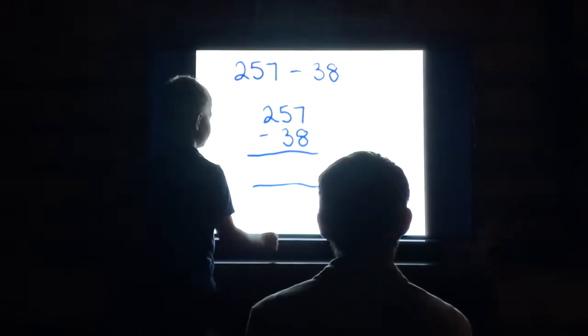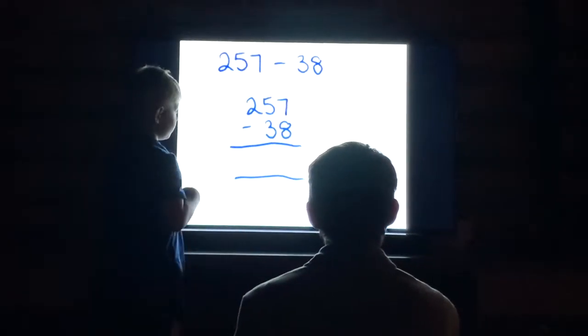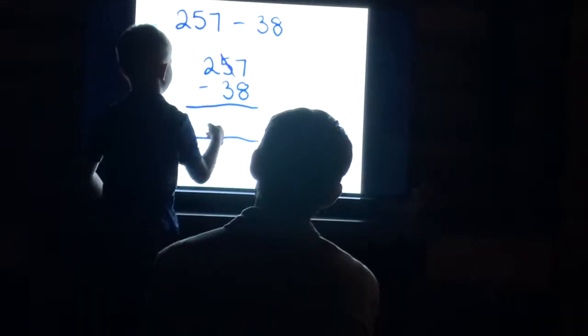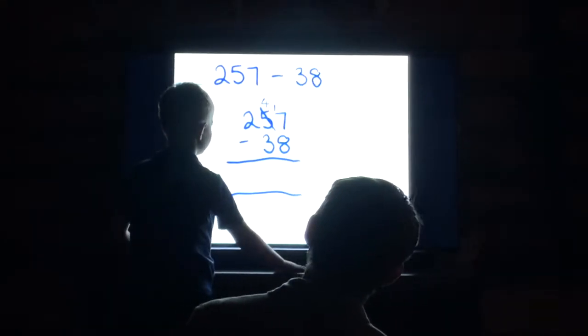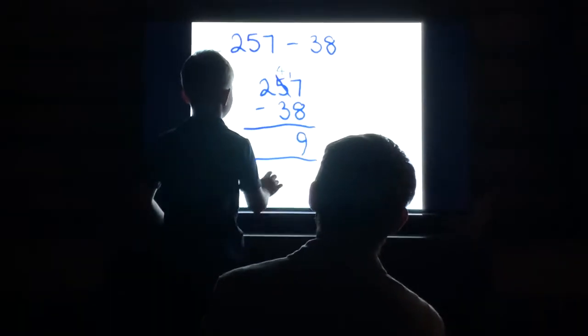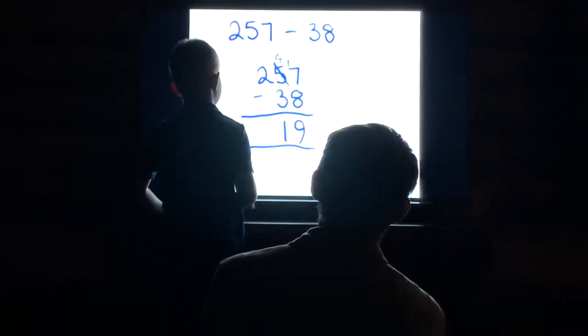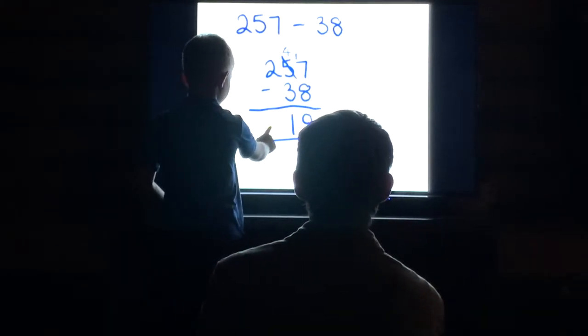257 minus 38. So I can take away 8 from the 7. Plus I can take away 3 from the 5. That equals 219.